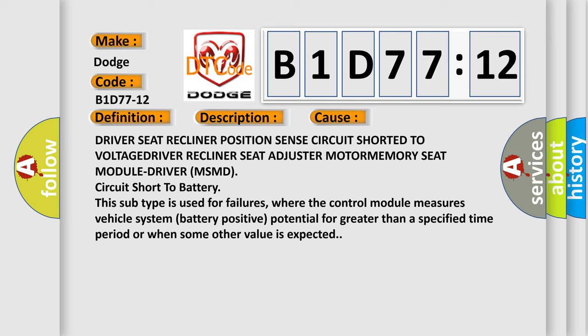This subtype is used for failures where the control module measures vehicle system battery positive potential for greater than a specified time period or when some other value is expected.